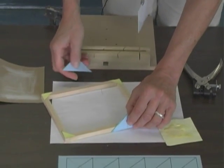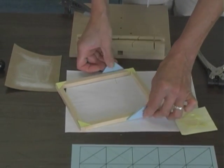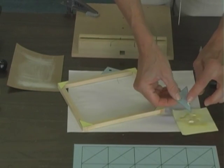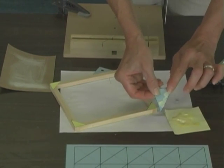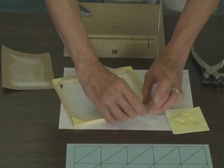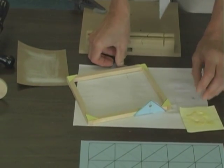You then attach your axle holders to either side of your frame using some glue. Now be careful when you do attach these.